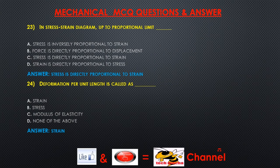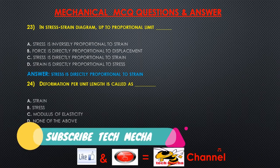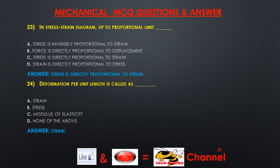Question 23: In a stress-strain diagram, up to the proportional limit — A) stress is inversely proportional to strain, B) force is directly proportional to displacement, C) stress is directly proportional to strain, D) strain is directly proportional to stress. Question 24: Deformation per unit length is called — A) strain, B) stress, C) modulus of elasticity, D) none of the above.